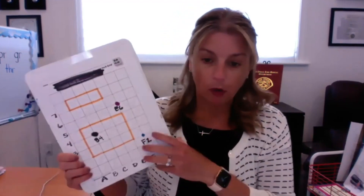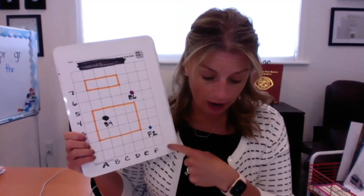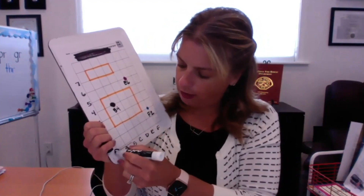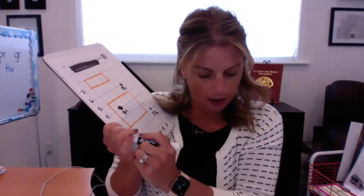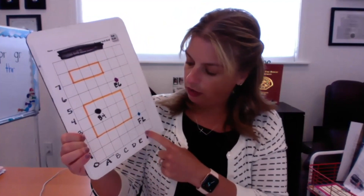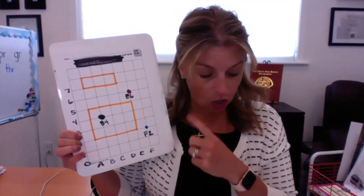So boys and girls, yesterday we were talking about coordinate graphs. And remember, when you read a coordinate graph, you start at zero — right here — and then you move across first, and then go up. And that's how we found the coordinate graphs.